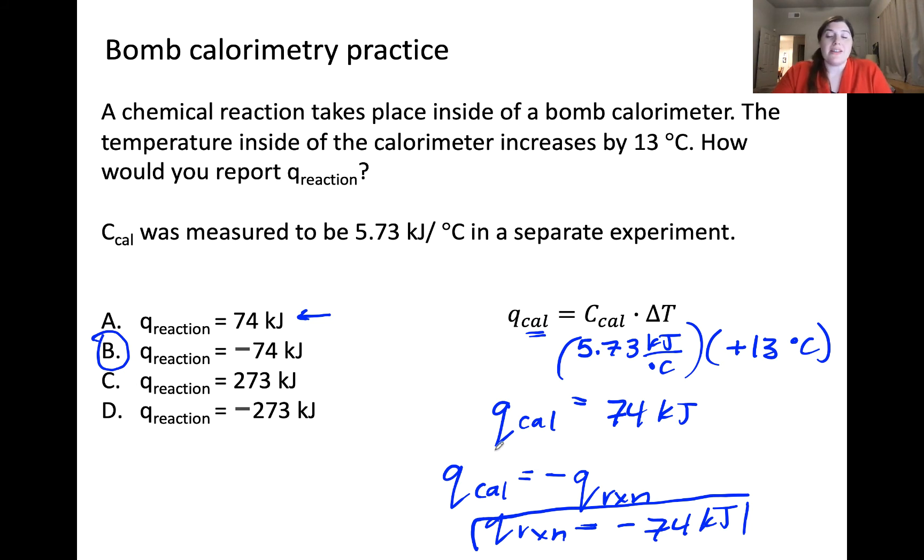It's really important to consider the meaning of this negative sign. Remember, the reaction is what's happening inside the bomb, the system. If Q of the system has a negative value, you'll recall from previous videos that this means that heat is being transferred from the system to the surroundings, from the reaction inside of the bomb out into the surrounding calorimeter. So this sign makes rational sense.